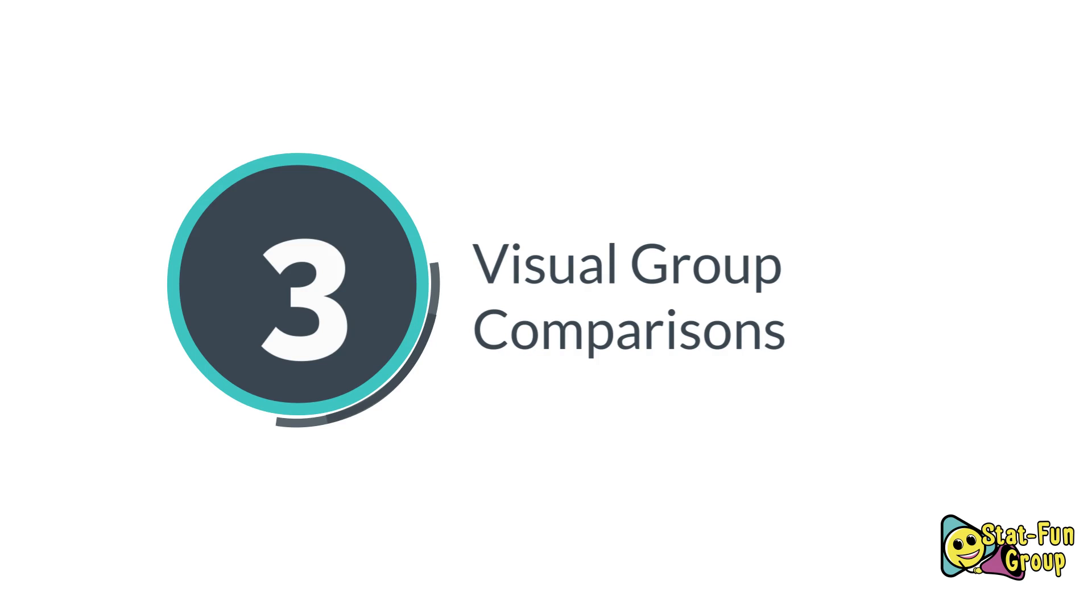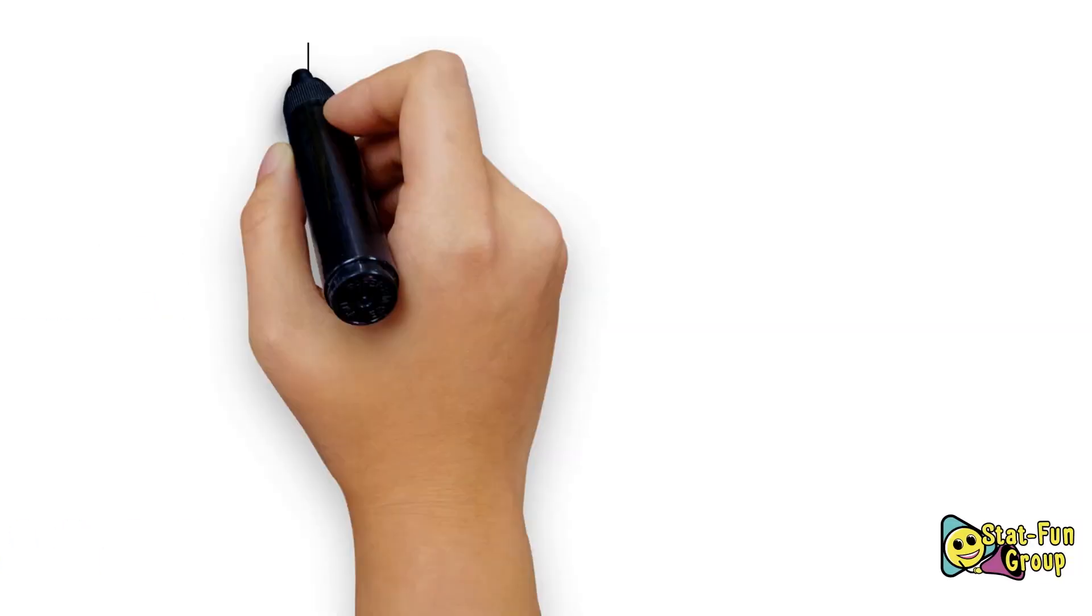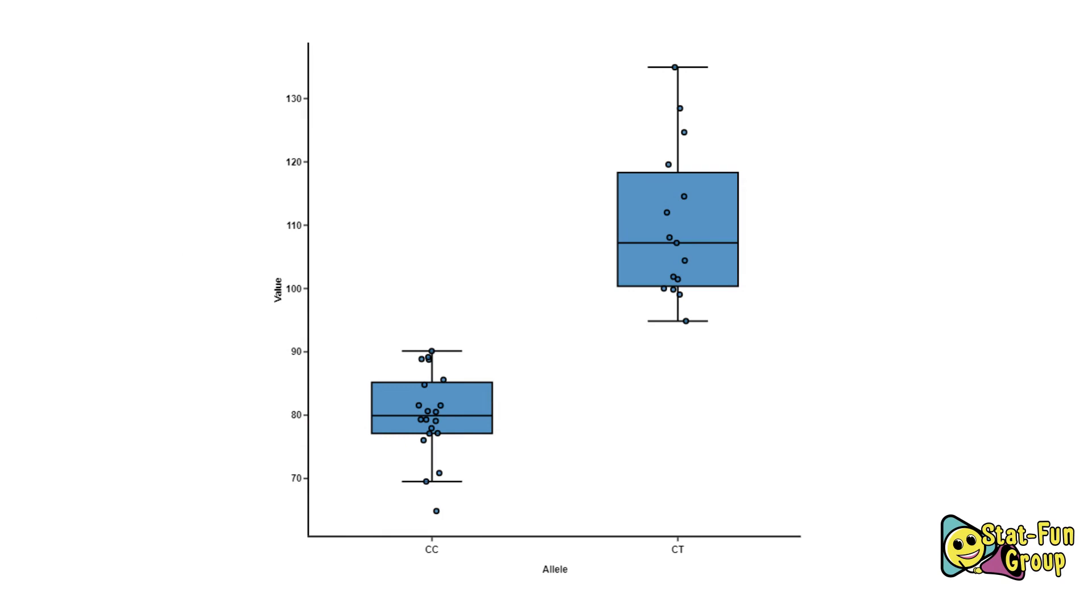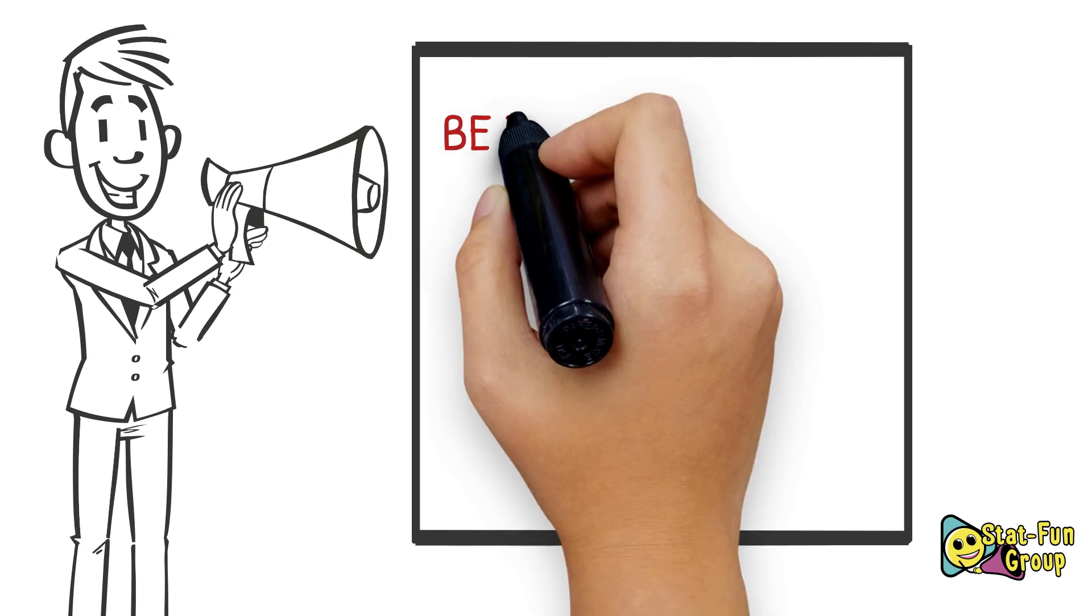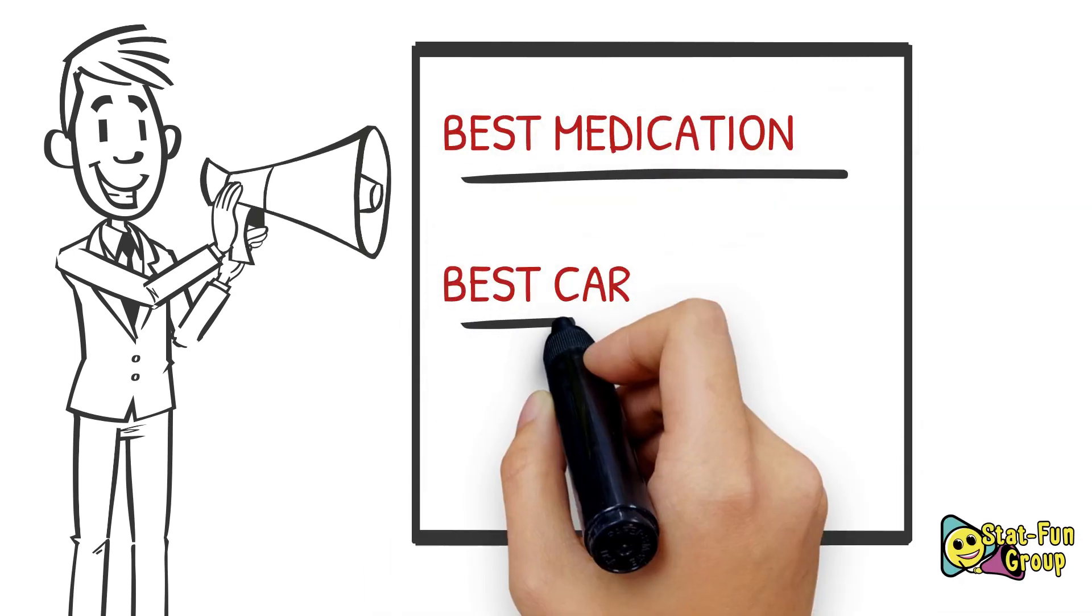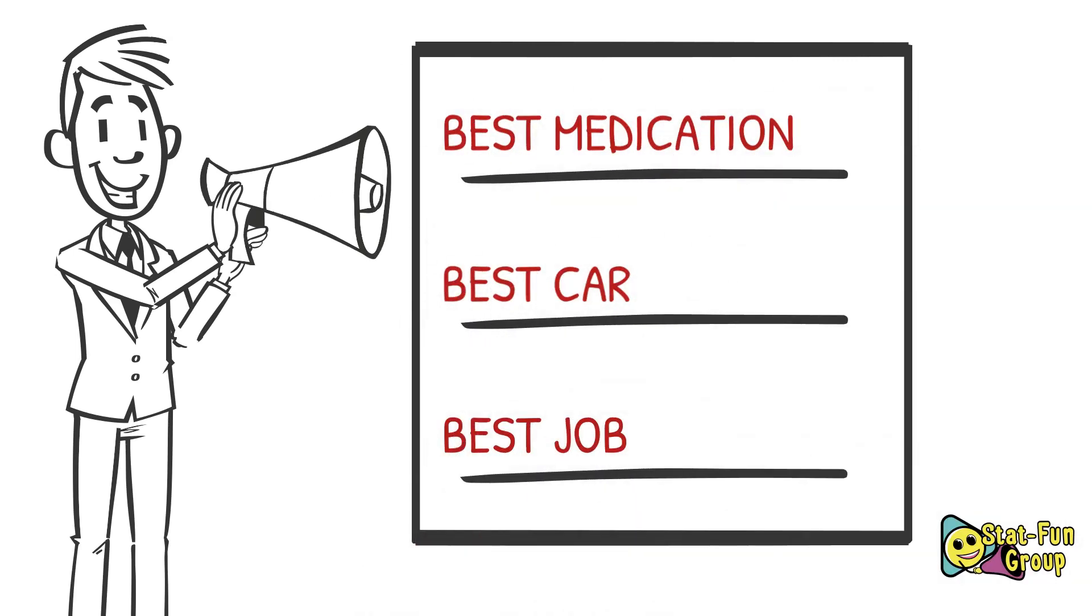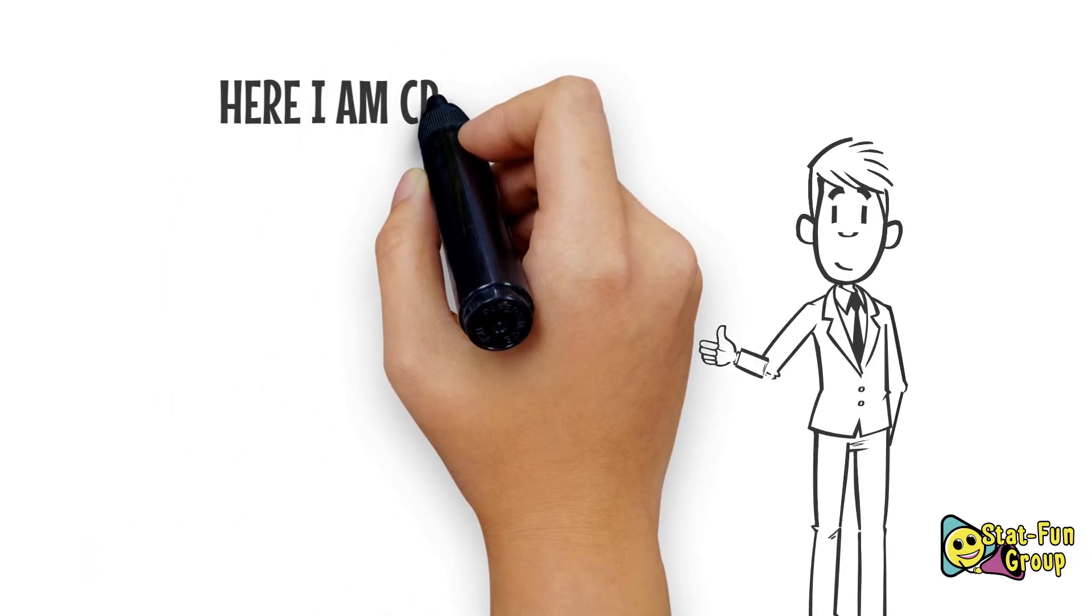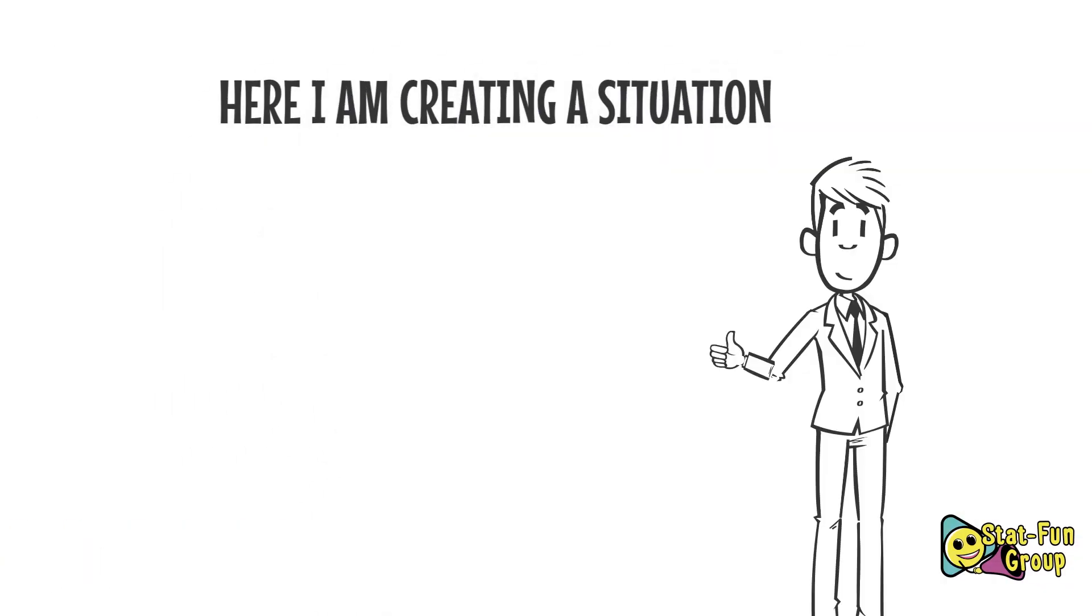Number three: group comparison. The third use of boxplot is visual group comparison. If two boxes do not overlap in the boxplot graph, then there is a significant difference between the two groups. Comparing groups can help you in selecting the best medication, best car, or best job, or best of something else. Here also I'm creating a situation.